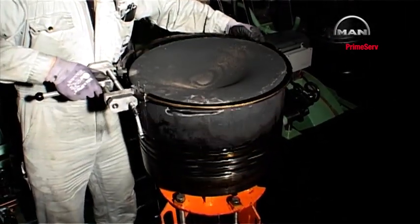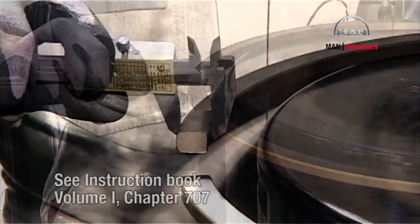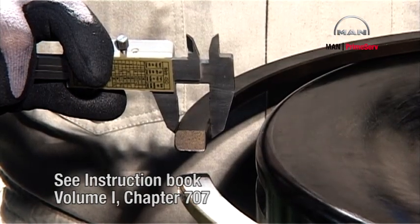Clean and inspect the rings and measure the radial width of the rings. Note down the results. See the instruction book, Volume 1, Chapter 707.